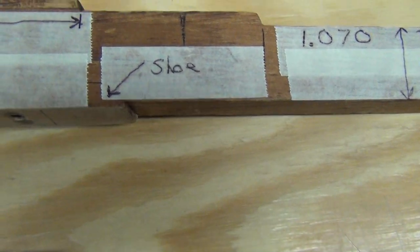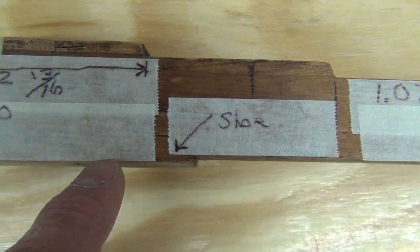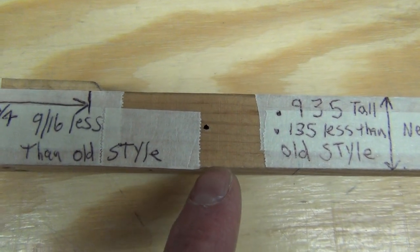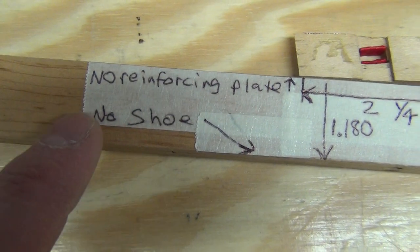They also eliminated the shoe. See, on the old key, there's a shoe on the bottom of the key. The new key, there is not. See, no shoe.